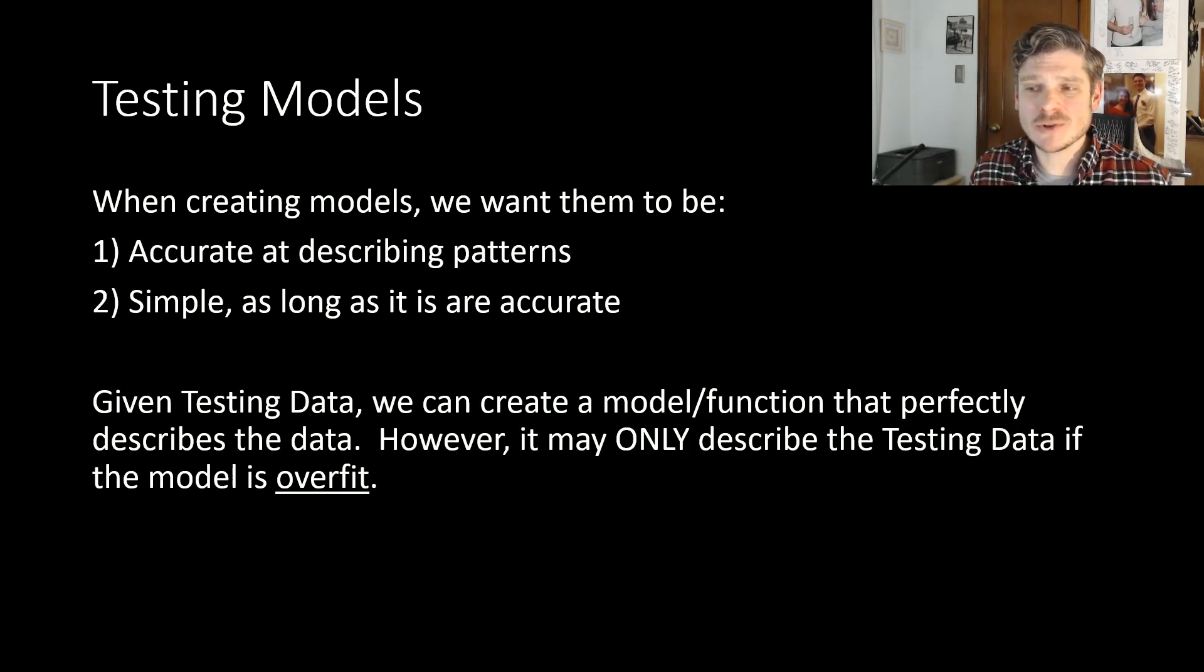And so when we create our models, we want two things. Number one is accurate. It's got to be an accurate model. If it's not accurate, there's no point. So we want an accurate model to describe our patterns. And we also want it to be as simple. We can make our models as complex as possible, but typically simple is better. Because what happens if we make our model too complex, if we make it too good at predicting based on my training data, what can happen is we can get an overfit model.